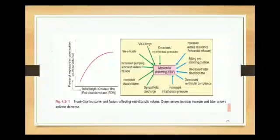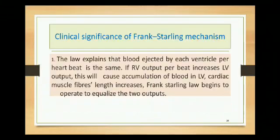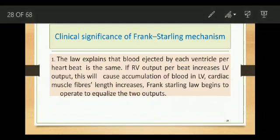We will discuss each point individually. The clinical significance of the Frank-Starling mechanism: this law explains that blood ejected by each ventricle per heartbeat is the same. The right ventricle cardiac output and the left ventricle cardiac output per beat should be equal. If they are not the same, the Frank-Starling law begins to operate to equalize the two outputs in the normal beat-to-beat variation.